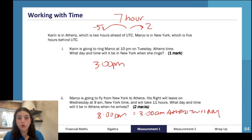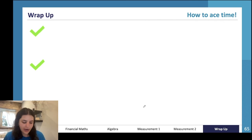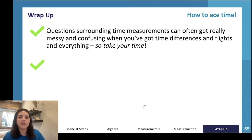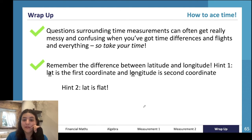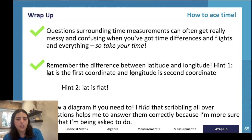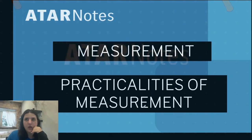Here are my top three tips for acing working with time. Questions surrounding these measurements can get really messy and confusing when you've got different time differences and flights, so take your time. Definitely draw diagrams as well. Remember the difference between latitude and longitude - lat is the first coordinate and it's flat, longitude is the second. Draw a diagram if you need to. Scribbling all over the questions just kind of helps me realize exactly what I need to figure out.